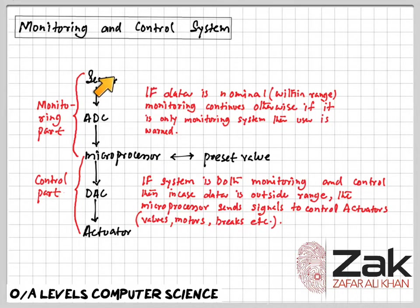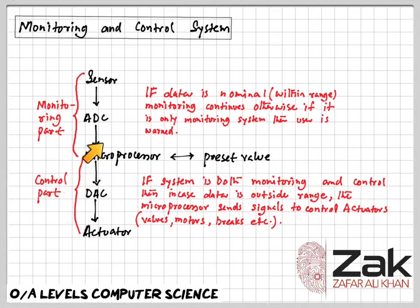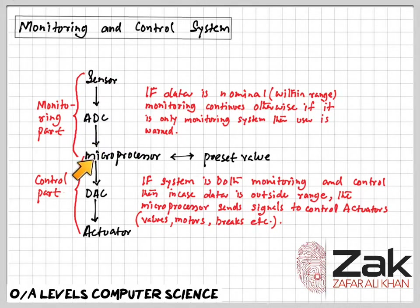To summarize: signals from sensors go to the microprocessor or computer, where they are converted to digital if necessary using an ADC (analog-to-digital converter). The microprocessor or computer then analyzes the data received by checking it against the stored or preset values.